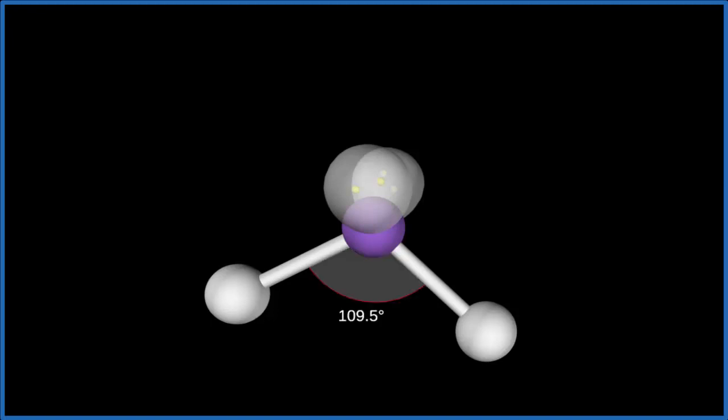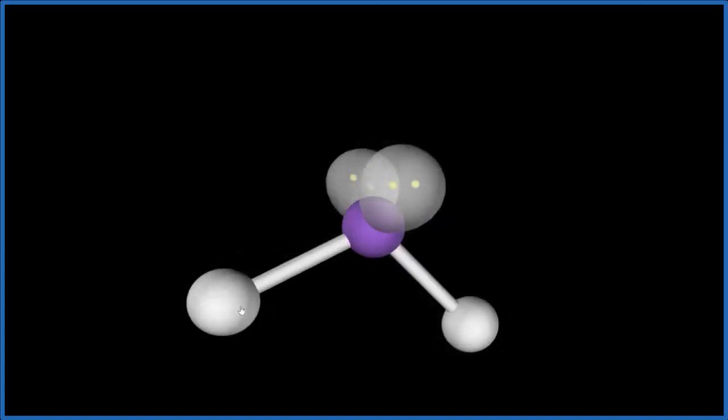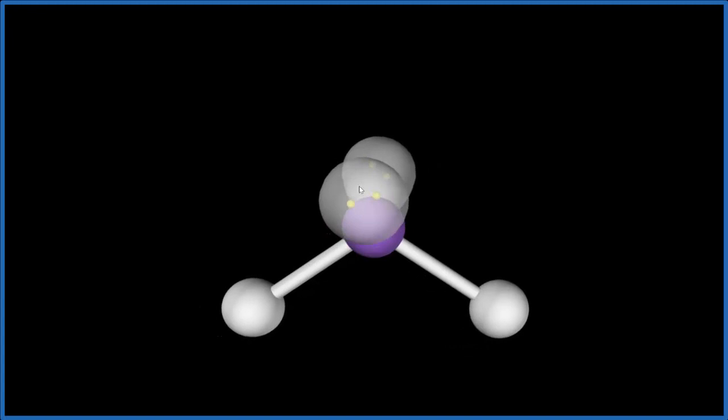The bond angle would be about 109.5 degrees, probably less since these lone pairs are going to push down more than the electron clouds on the chlorine atoms. So we have a bent molecular geometry.